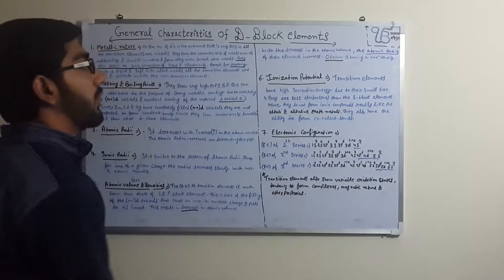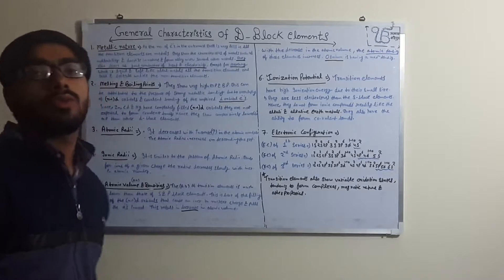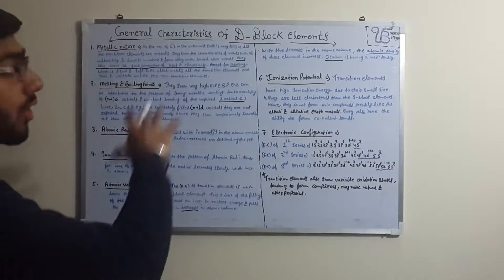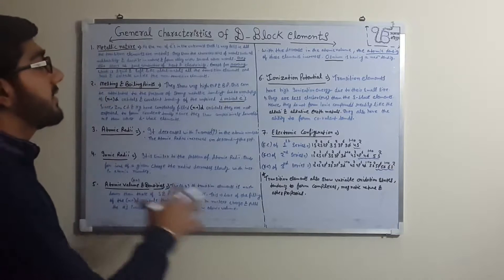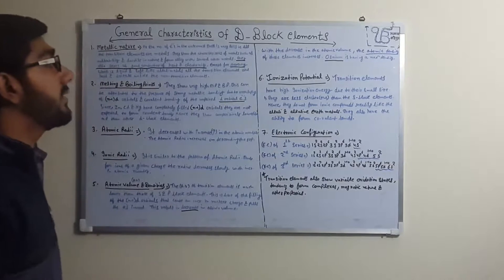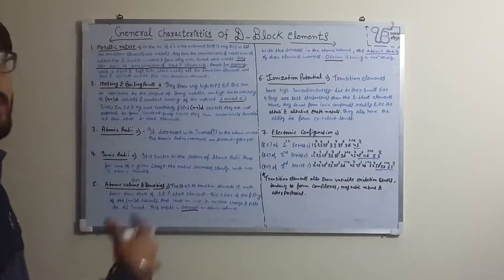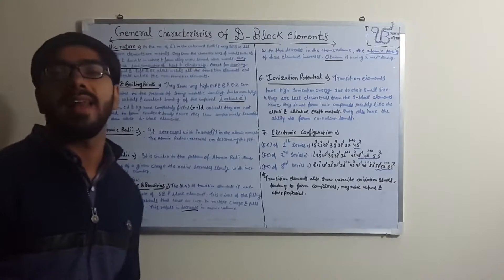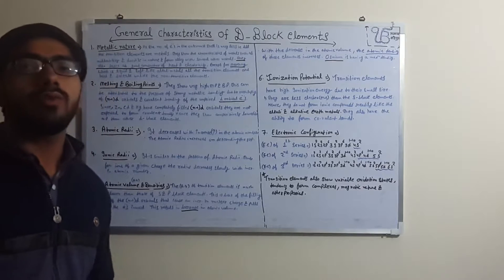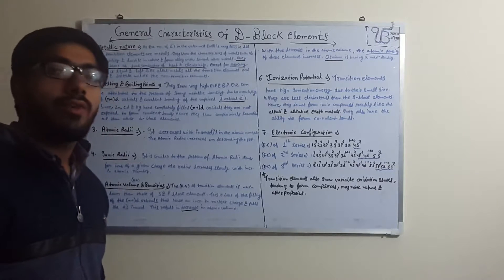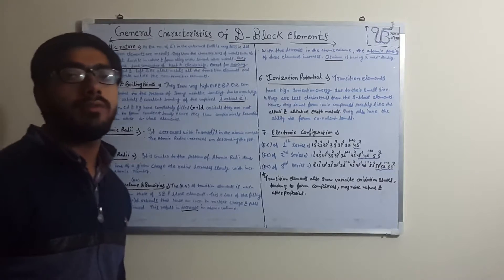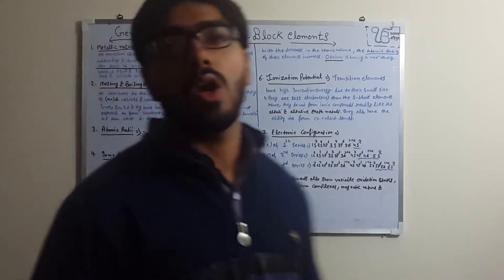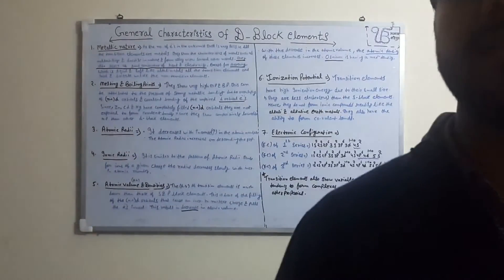So these 7 points are the general characteristics of D block elements. Thank you friends, and for more videos please subscribe.